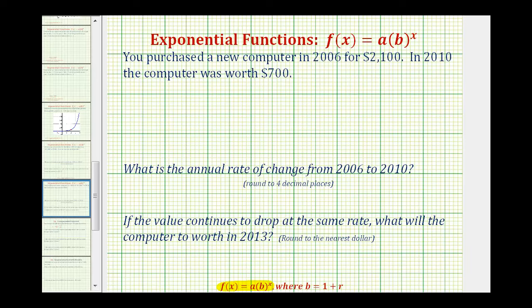So looking at the information that we're given, we're going to let 2006 be the base year, and notice how in 2006 the value of the computer was $2,100. And since 2006 is the base year, we're going to let t equals zero represent the year 2006.